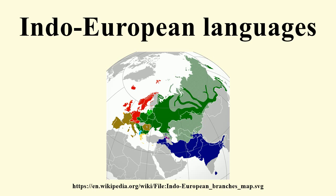Lusitanian is possibly related to Celtic, Ligurian, or Italic. Cimmerian is possibly Iranian, Thracian, or Celtic.